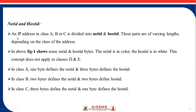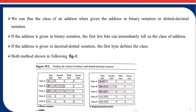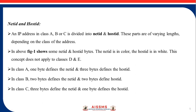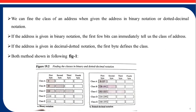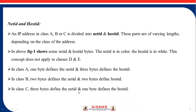An IP address in class A, B, or C is divided into a net ID and a host ID. The parts vary in length depending on the class of the address. As shown in figure 1, the shaded portion represents the net ID and the white portion represents the host ID. This concept does not apply to classes D and E. In class A, one byte defines the net ID and the remaining three bytes define the host ID. In class B, two bytes define the net ID and two bytes define the host ID. In class C, three bytes define the net ID and one byte defines the host ID.